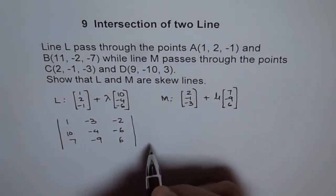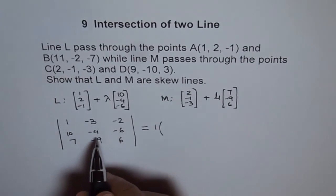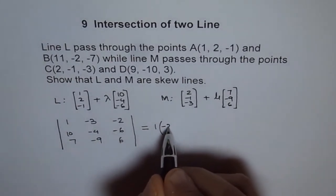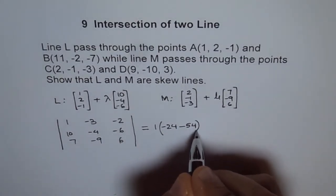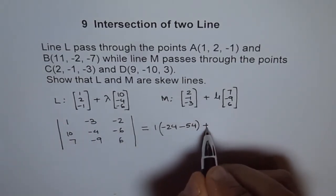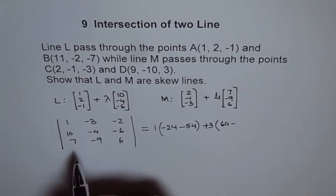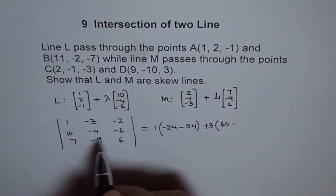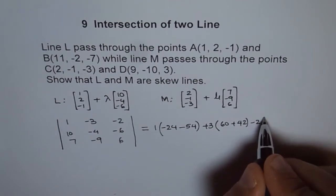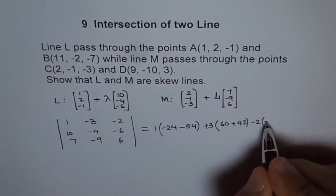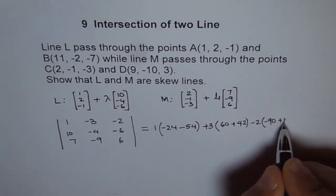Expanding the determinant: 1 times ((-4)(6) minus (-9)(6)) gives minus 24 minus of 54. Then minus 3 times ((10)(6) minus (7)(6)), which is 60 minus 42. Then minus 2 times ((10)(-9) minus (-4)(7)), which is minus 90 plus 28.